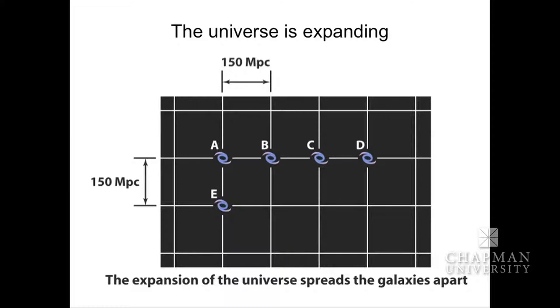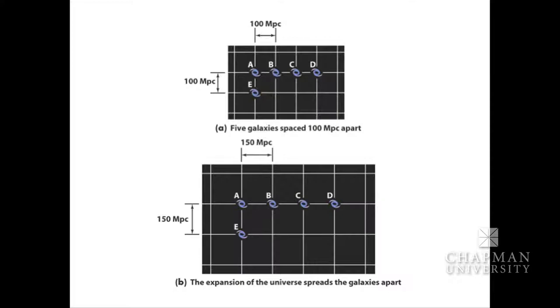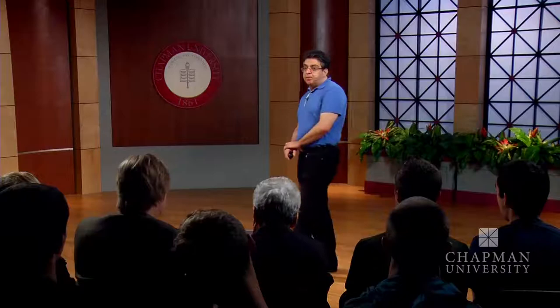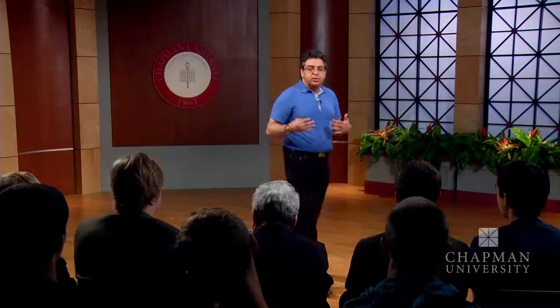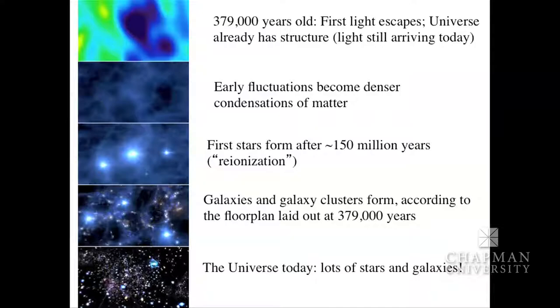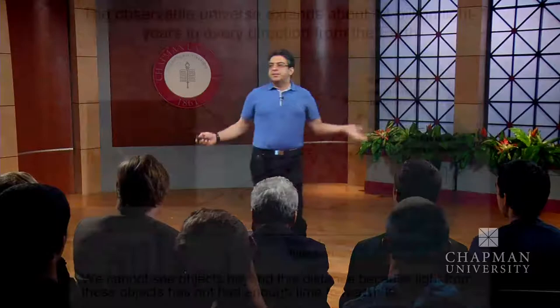We know that our universe is expanding. Since the universe is expanding, if you rewind the movie of this expansion, you will get to the singular point, which is the Big Bang. When the universe was only 400,000 years old, it became transparent — before that it was opaque, we couldn't see beyond that point. Comparing to the age of the universe, about 14 billion years, the universe was quite young when it became transparent.